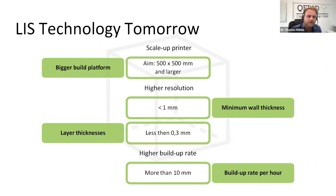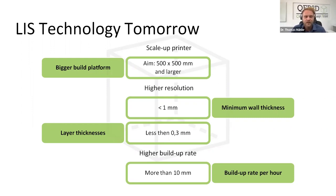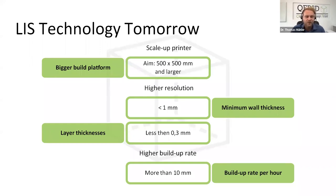Looking at this technology tomorrow: one of the next steps is to scale up the build platform to 500 × 500 mm, which opens up larger part sizes or four times more parts within one printing step. As Mr. Vampers has already shown, it is possible to produce simple geometries for green body post-processing very quickly with the LIS process. On the other hand, to print very close to final contour — reducing process steps for green body shaping and saving material — our development is directed toward improving resolution through thinner layers and special additives.